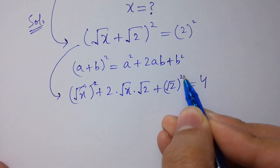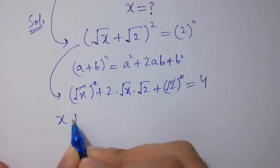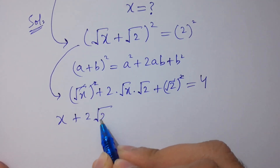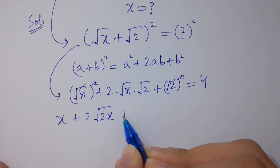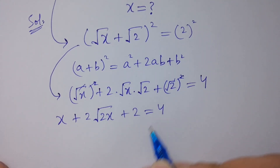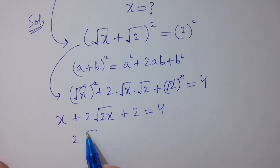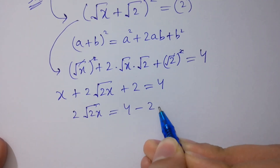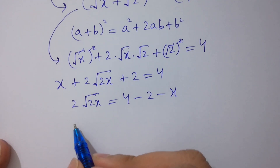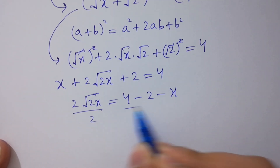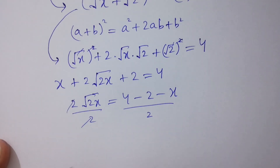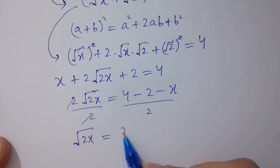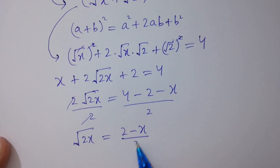The square cancels from square root of x. We have x plus 2 times square root of 2x plus 2 equals 4. Subtract 2 from both sides and divide by 2 on both sides — 2 and 2 cancel. Square root of 2x equals 4 minus 2, giving 2 minus x over 2.